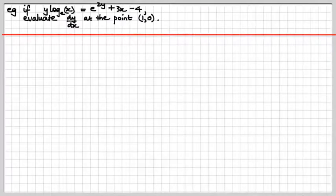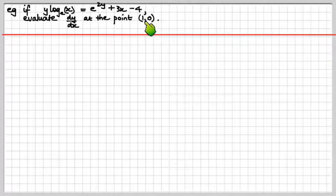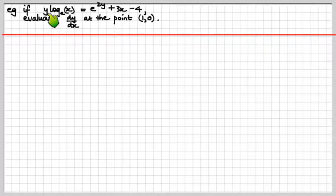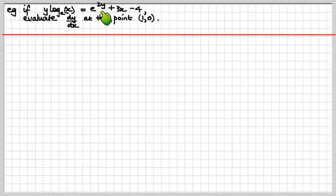Here's another one — that looks even worse. How in the universe would you make y the subject of that? You wouldn't. So it's implicit differentiation to the rescue. We need to evaluate it at a specific point: x is 1 and y is 0. It looks like we've got a product rule to worry about here, as well as our dy/dx chain rule terms. Let's go.